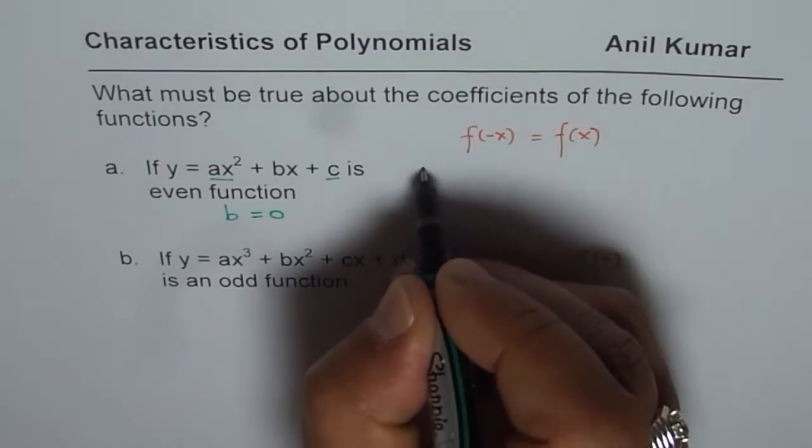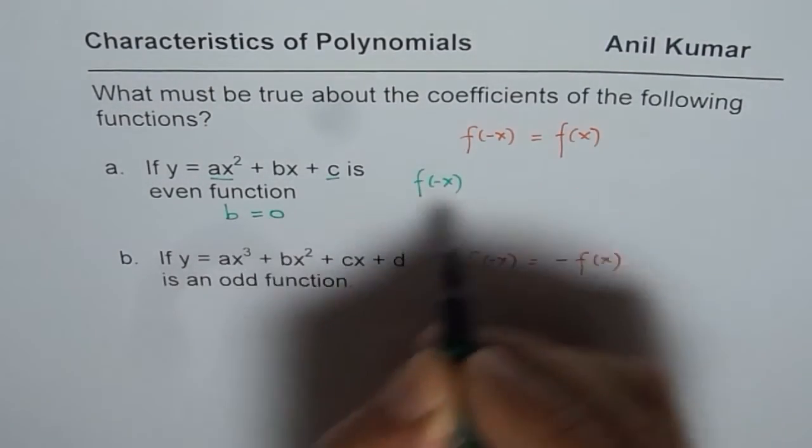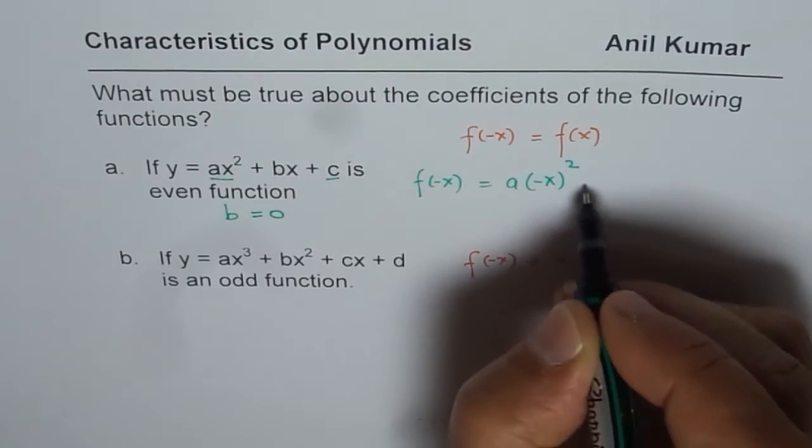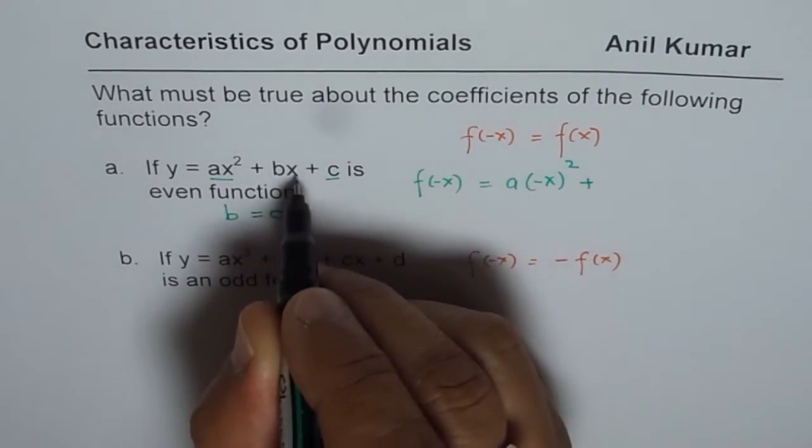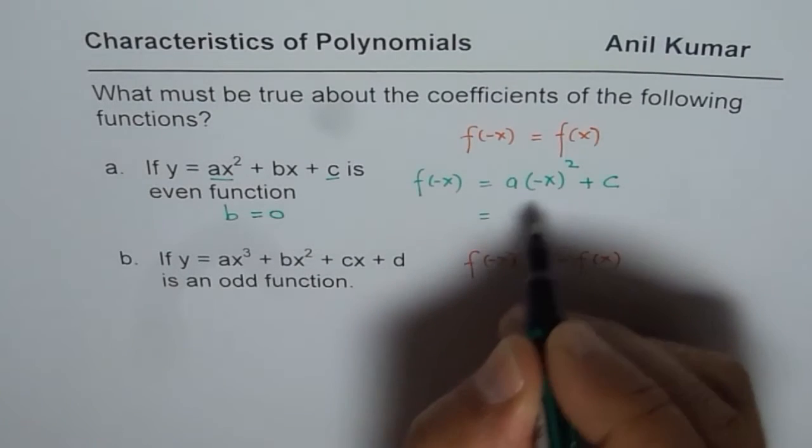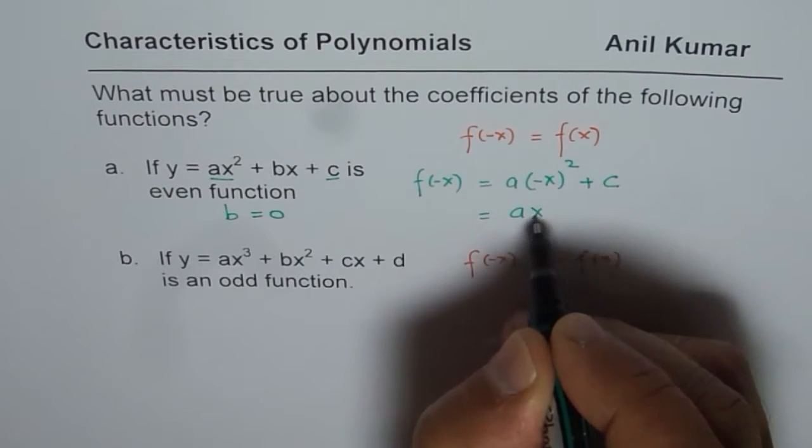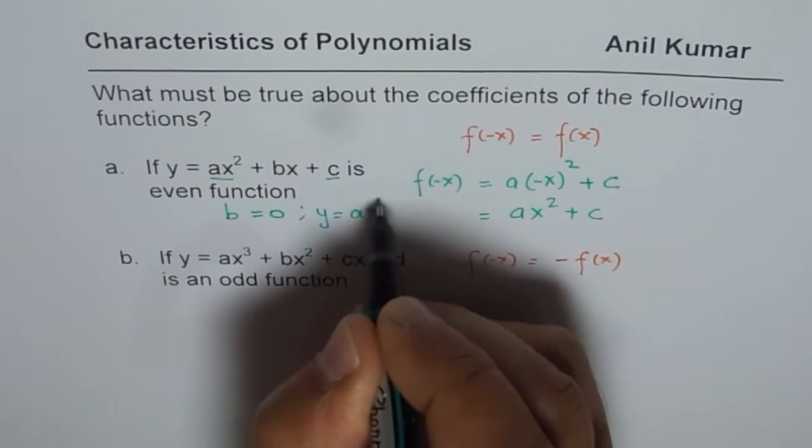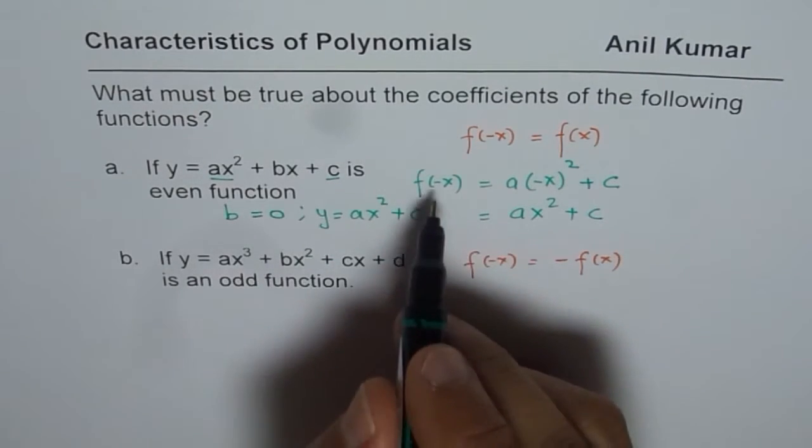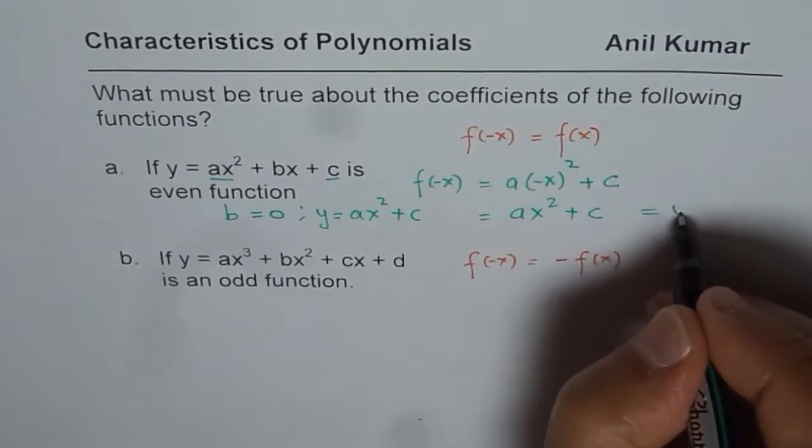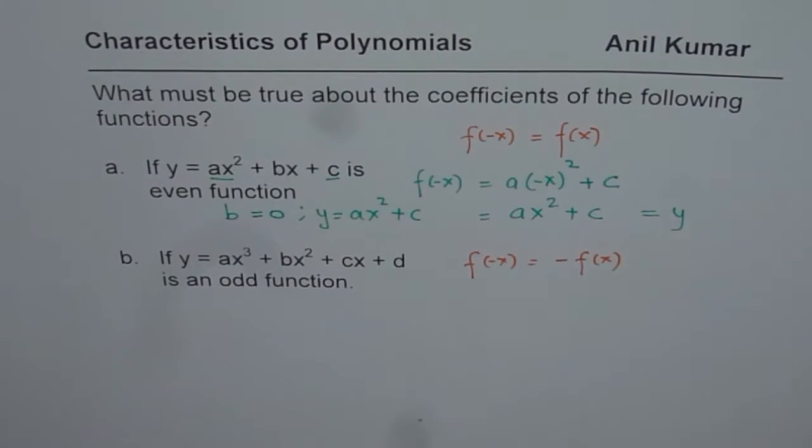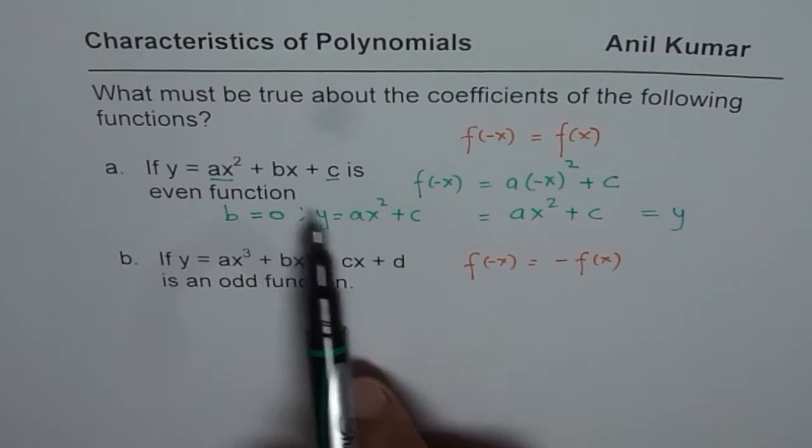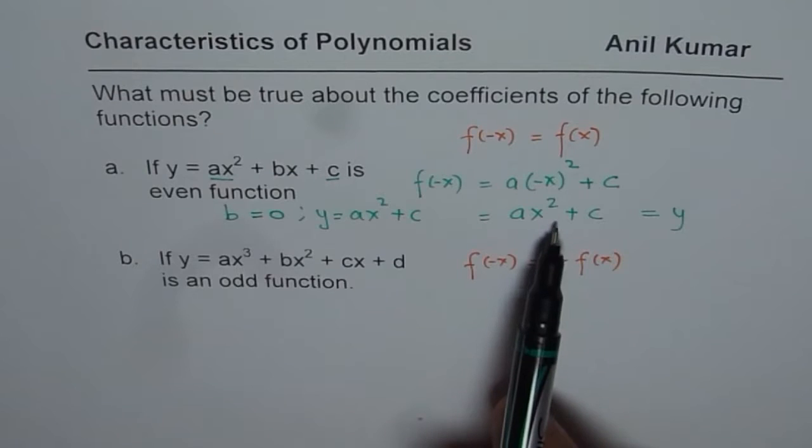Let me show you how. If I find f of minus x with b equals zero, in that case we get a times minus x whole squared. Now since b is zero, we don't have b here. Otherwise, this will not be even. So it's c, and as you know, minus x squared is positive, so it is ax² + c. If b is zero, we get y equals ax² + c. And now you can see that f of minus x equals y, the original function. So it is even only if b equals zero. Otherwise it is not even, because then you'll have a minus bx term in between.